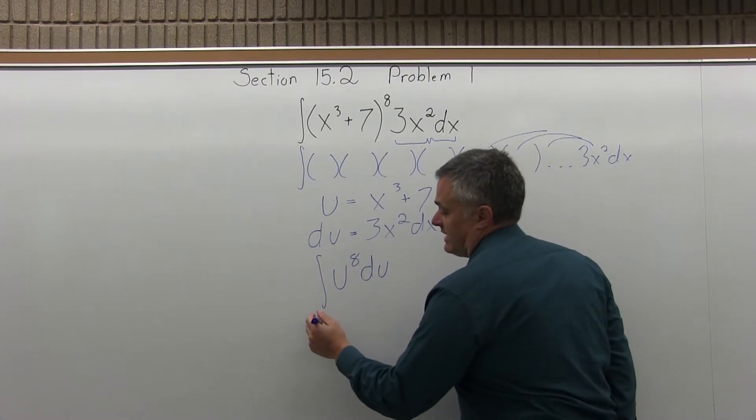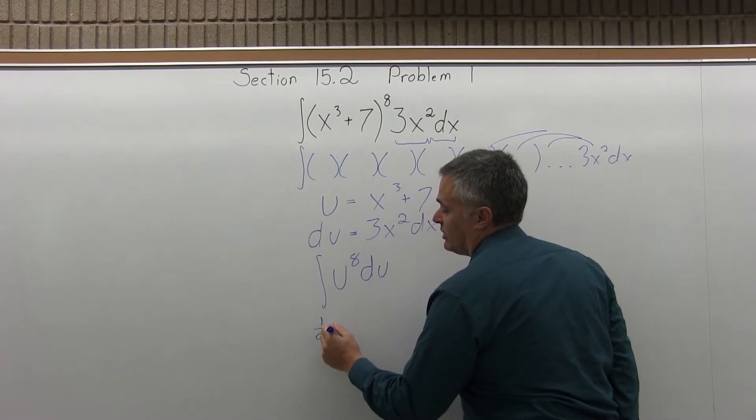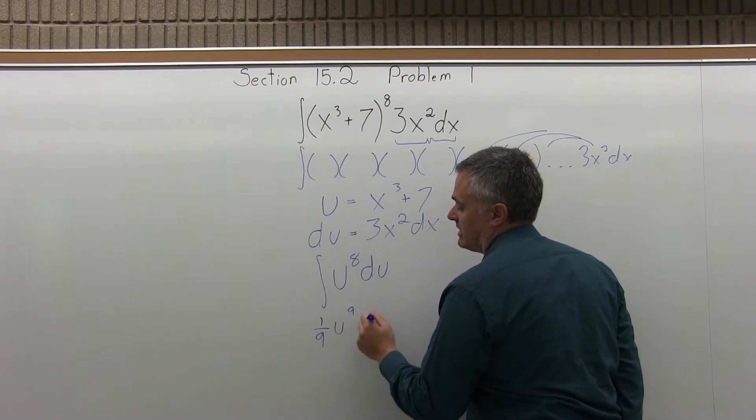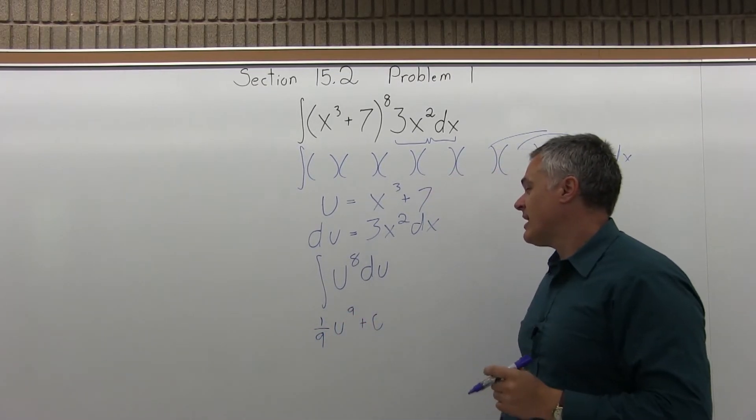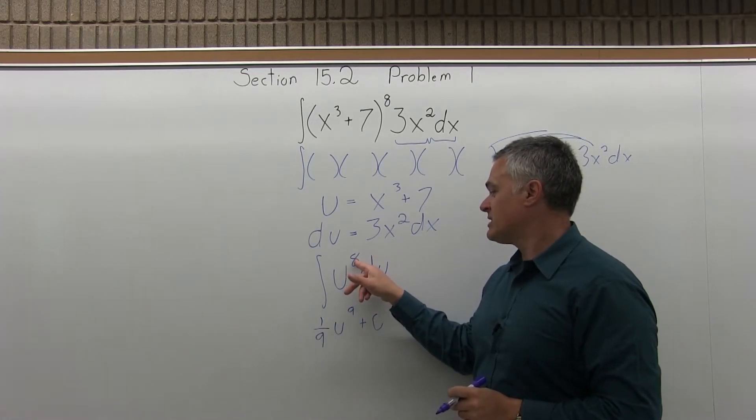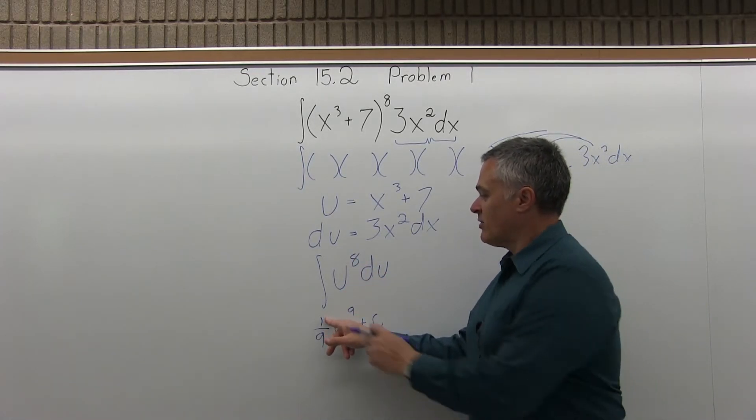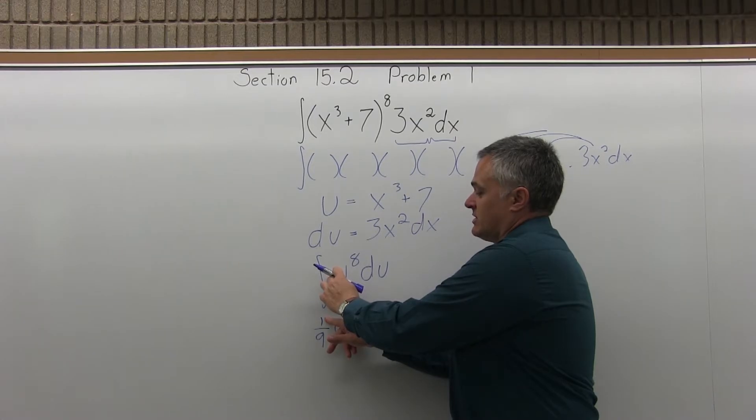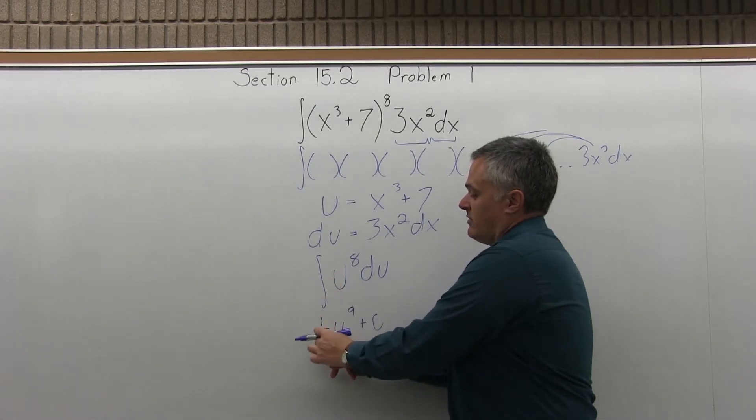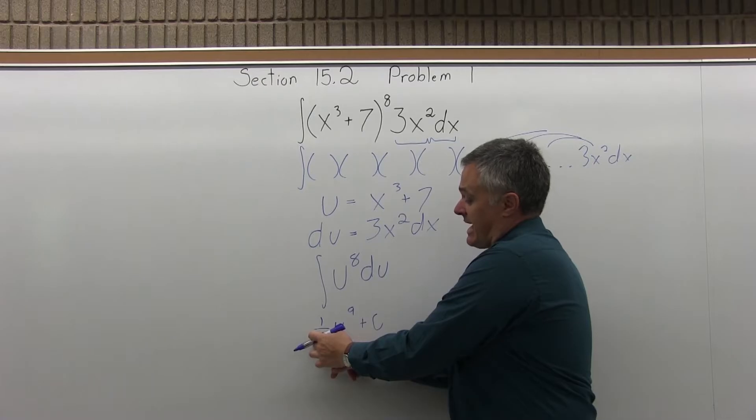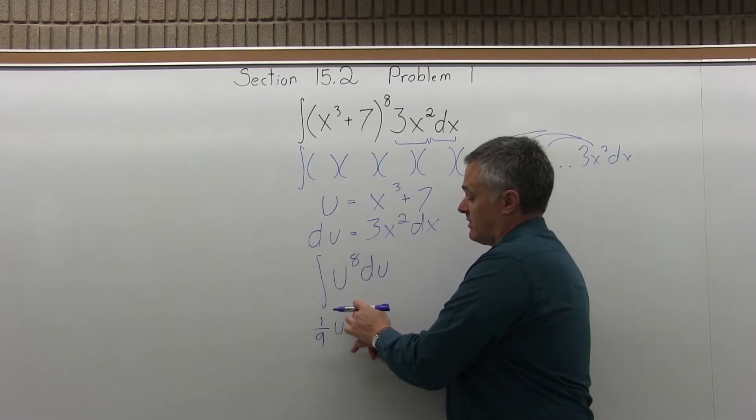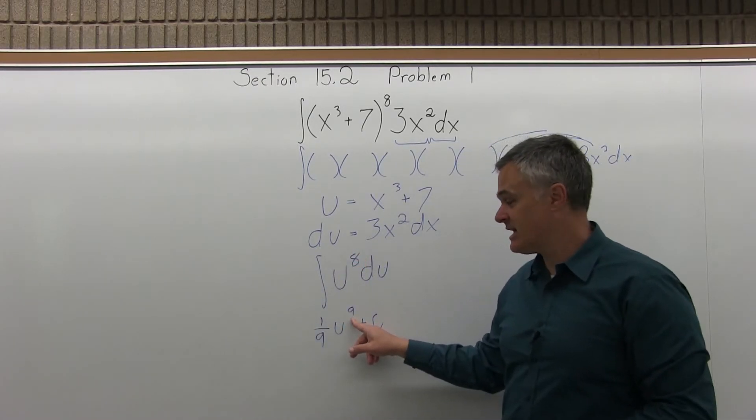Well, the integral of u to the eighth is going to be 1 over 9 u to the ninth plus some constant. When we take an integral, we take our exponent, and we do the number in front of the variable, which is understood to be 1, over the old exponent plus 1. So 8 plus 1 is my 9, and the new exponent is the old exponent plus 1. So again, 8 plus 1 is the ninth. So that's the answer.